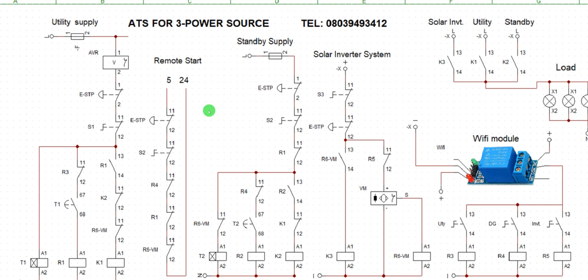Once the simulation passes testing, you then purchase the components and carry out the wiring. Contact me and we'll design this together — it's a very simple design. ATS can synchronize up to 10 or more power sources, alternating them as needed. You can set one as prime and one as standby, or even design the ATS to alternate sources between day and night operation, depending on your design method.